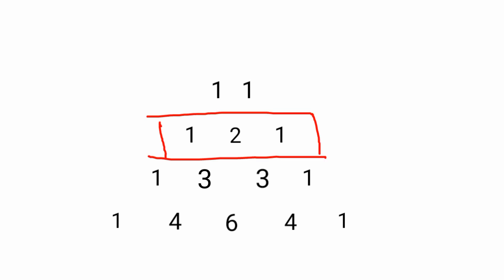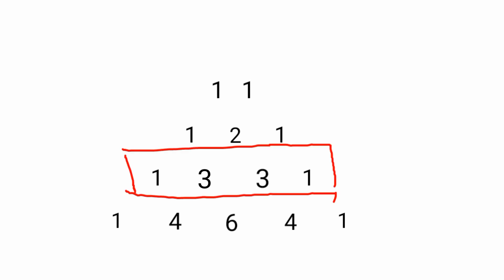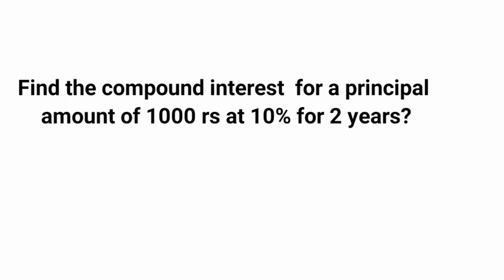Hope you understood how we are writing Pascal's triangle. Now, coming to the shortcut: if you are asked to find the compound interest after 2 years, take the numbers from the second row — that is 1, 2, 1. If asked for 3 years, consider the third row — that is 1, 3, 3, 1. Depending on the number of years, take the corresponding row. Now we will do some problems to make this clear.